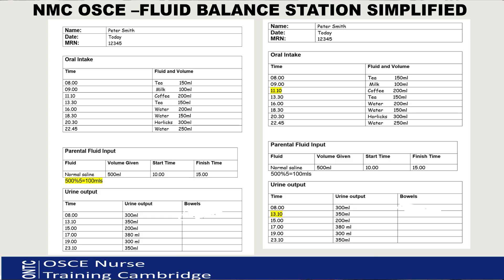The second important thing to remember is that if your patient has something at 10 past 11 or quarter past 11, it still goes in the 11 o'clock box. The same applies to output - if there's something at 10 past 1 for urine, you just put it in the 1 o'clock box, because every box represents 59 minutes.